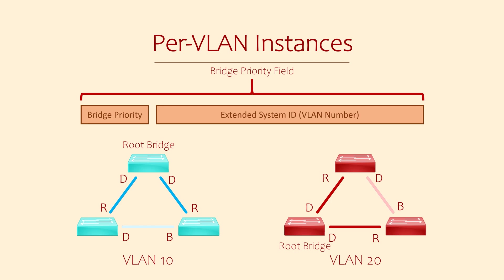There are pros and cons to this approach. In a traditional model, some links would still be blocked, sitting there idle all the time — essentially being wasted. In our per-VLAN model, a link may be blocked for VLAN 10, and a different link is blocked for VLAN 20, meaning we're utilizing all our links. On the other hand, the switch needs to maintain a separate instance for every VLAN, even if they have the same configuration. If you have a lot of VLANs, your switch will have a lot of spanning tree processes, which puts more load on the switch's hardware.